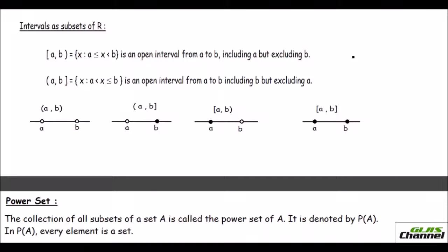Next is about the intervals. If you have a box bracket on the left and a closing parenthesis on the right — written as [A, B) — it has elements X where X is greater than or equal to A and less than B. This is a half-open interval: it includes A (closed side) but excludes B (open side).